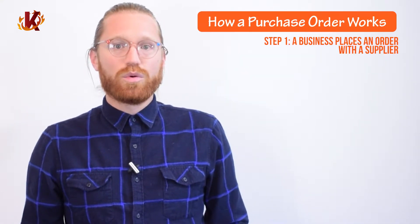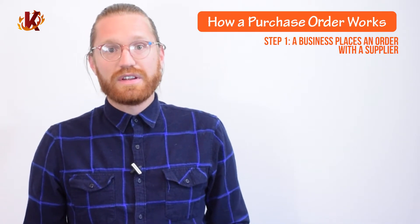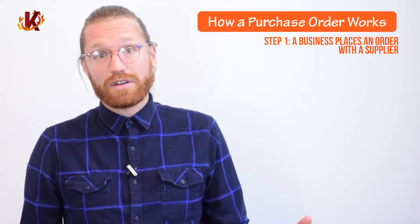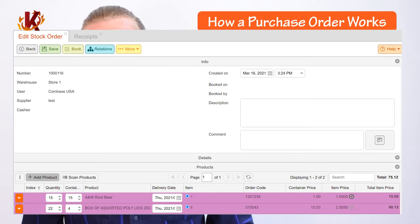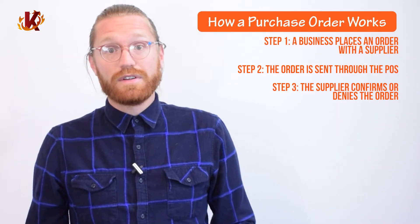First, a business decides to place an order for a product or service. The business then sends a purchase order to the supplier electronically through the POS software. The supplier receives the order and either confirms or denies the ability to fill the order.